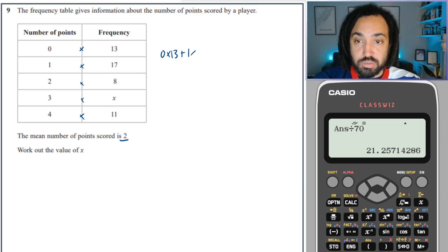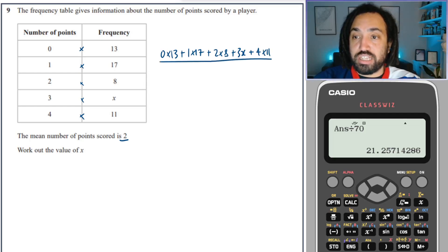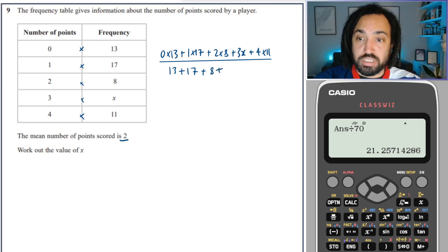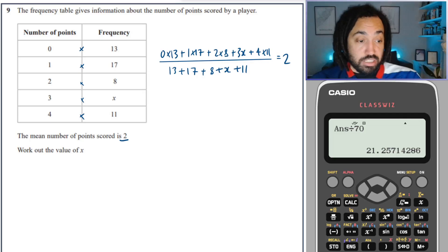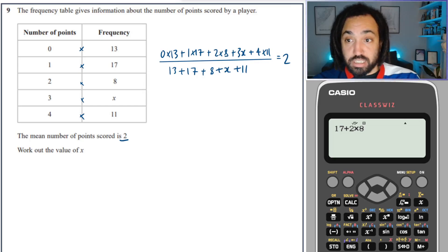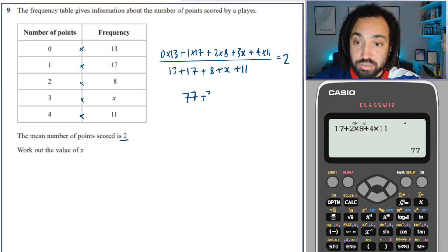So 0 times 13, plus 1 times 17, plus 2 times 8, plus 3 times x, plus 4 times 11. I'll need to divide that by the total frequency, which is 13 plus 17 plus 8 plus x plus 11. And that will equal the mean, which is 2. Let's do the top row first. We've got 0 times 13, which is obviously 0. 1 times 17 is 17, plus 2 times 8, plus 4 times 11. So that's 77, and we've got that 3x there as well. Don't forget about that.